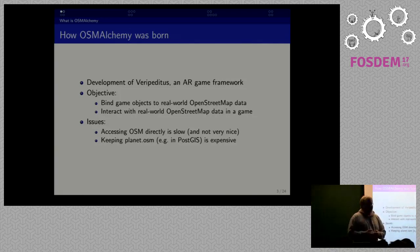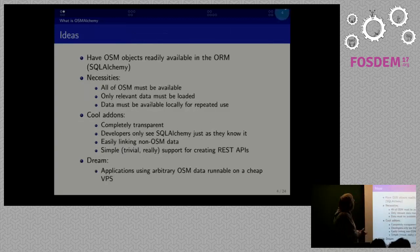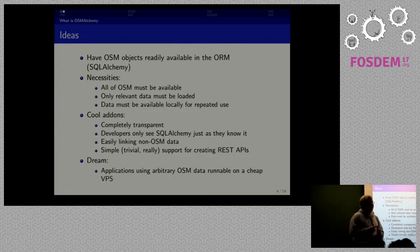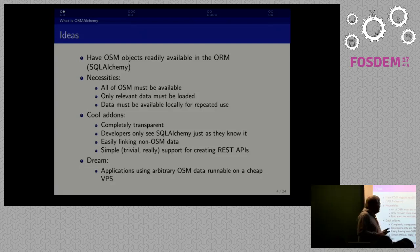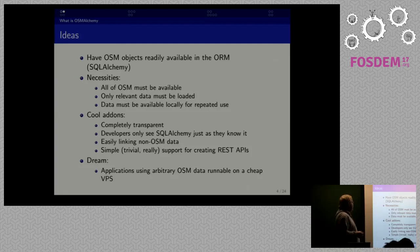We didn't have the resources to handle that and couldn't set up a database instance to work with this data, so we came up with an idea. We wanted to have all of OpenStreetMap available — not just a subset — so people creating augmented reality games on the server shouldn't be limited. We wanted the application itself to only load relevant data, not the full set, and we wanted the data to be available on the local server at any point in time, not loaded from the OpenStreetMap API every few seconds.